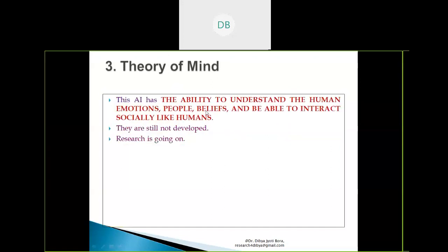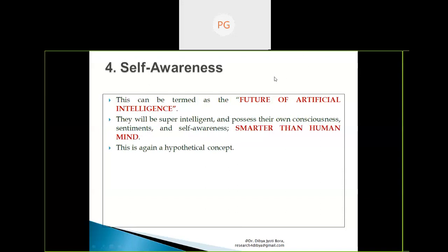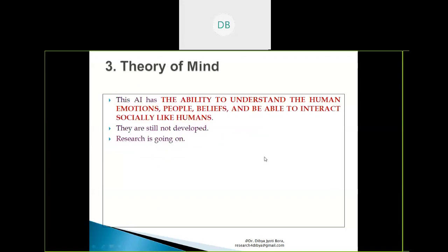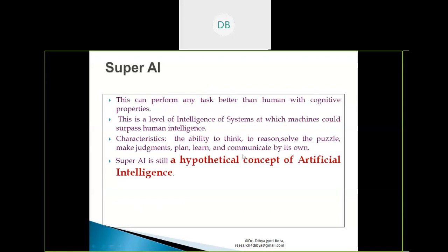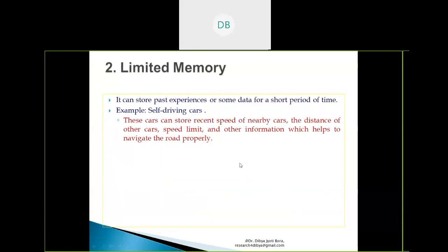The next is theory of mind — AI that has the ability to understand human emotions, beliefs, and interact socially like humans. Research is ongoing and such machines are not yet developed. Then self-awareness, which can be termed as the future of artificial intelligence. These machines will be super-intelligent, possessing their own consciousness, sentiments, and self-awareness, and will be smarter than human beings. This is again a hypothetical concept, similar to Type 1 super AI.